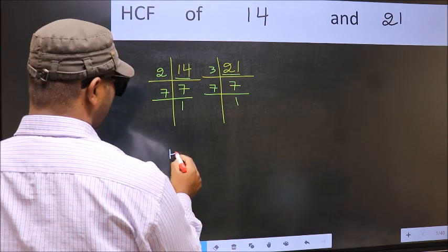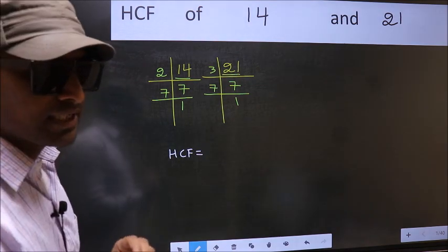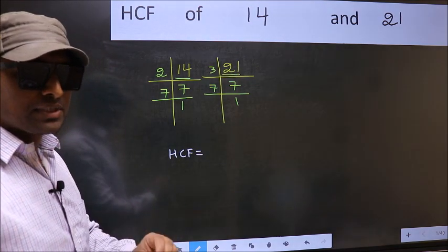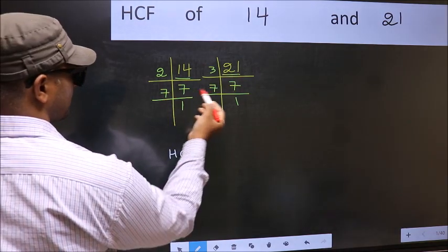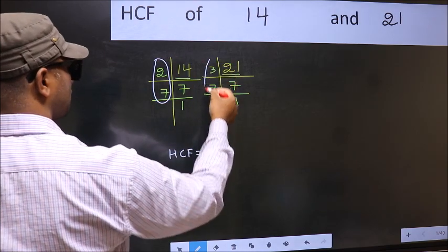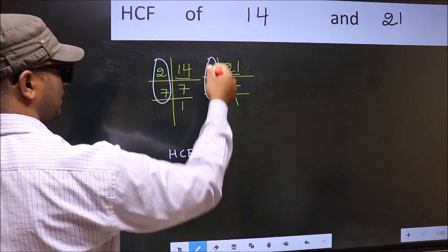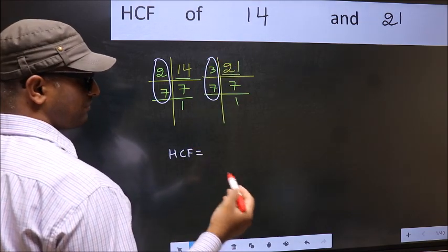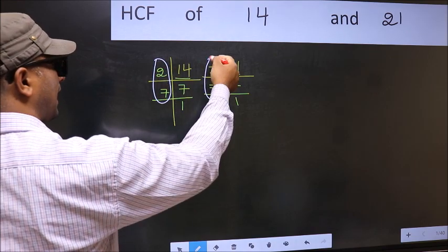Therefore our HCF is the product of the numbers which should be present in these two places, here and also here. Here and here. So now let us find the numbers which should be present here and here.